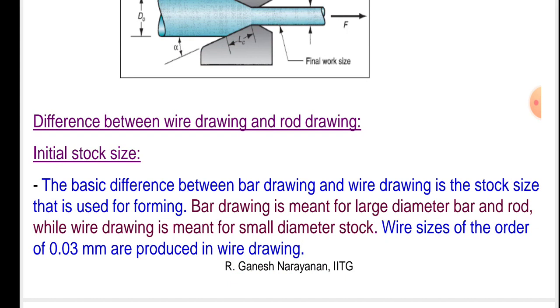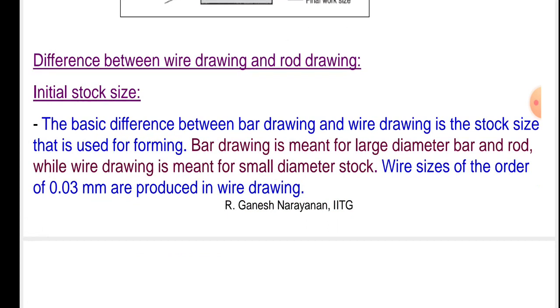Difference between wire drawing and rod drawing - initial stock size: The basic difference is the stock size used for forming. Bar drawing is meant for large diameter bar and rod, while wire drawing is meant for small diameter stock. Wire sizes of the order of 0.03 mm are produced in wire drawing.